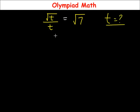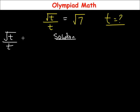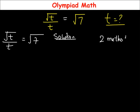Now to solve for t, the equation is √t over t is equal to √7. There are two methods by which we can solve this equation.